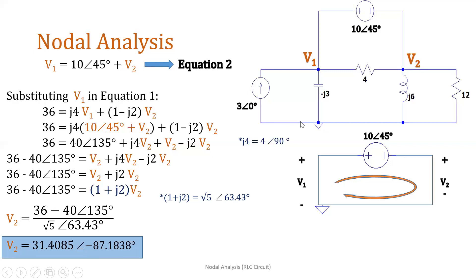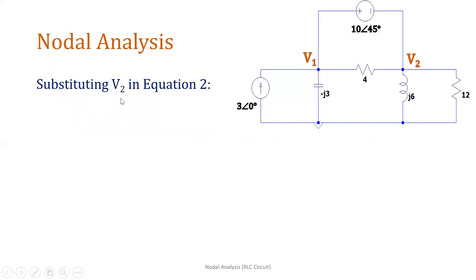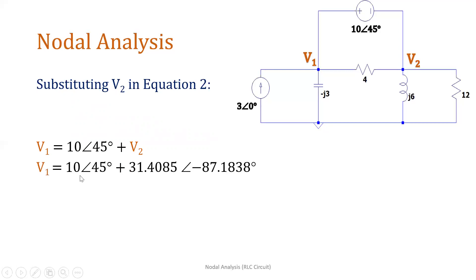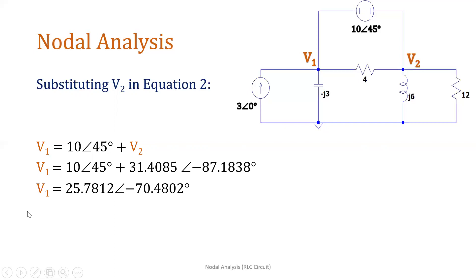That is nodal voltage 2. Now we need to get V1. Since we already know V2, we substitute it into equation 2. From KVL, V1 = 10∠45° + V2, so V1 = 10∠45° + 31.4085∠−87.1838°, resulting in V1 = 25.78∠−70.48°. That is our V1.